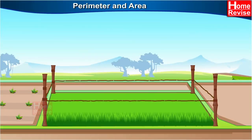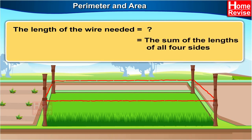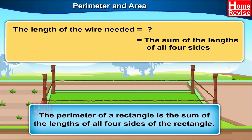A fence of a single wire has to be put around a rectangular field. We have to find out the length of the wire needed. The sum of the length of all four sides of the rectangular field will tell us the length of wire needed. The perimeter of a rectangle is the sum of the length of all four sides of the rectangle.